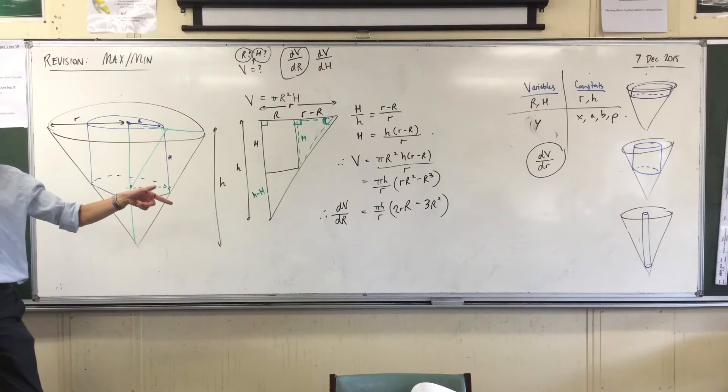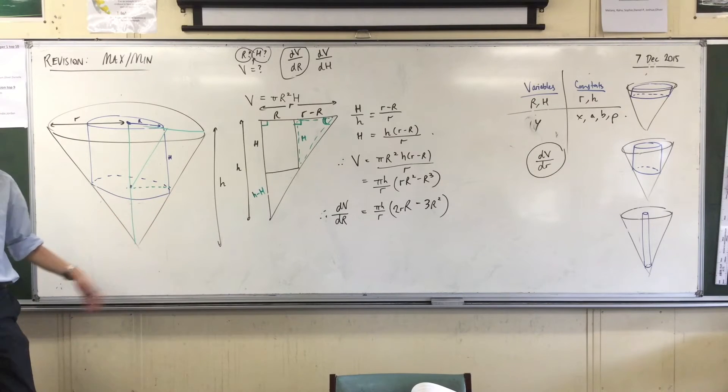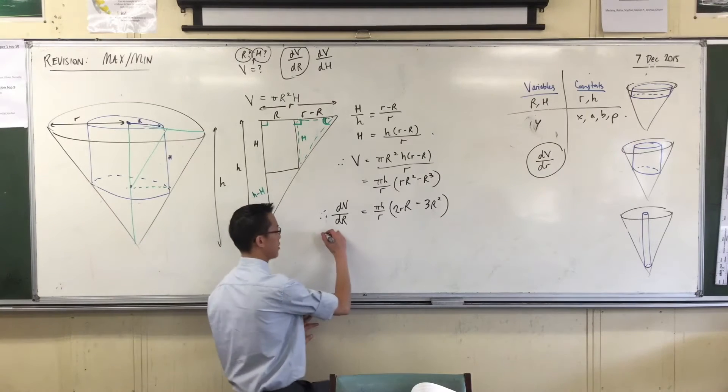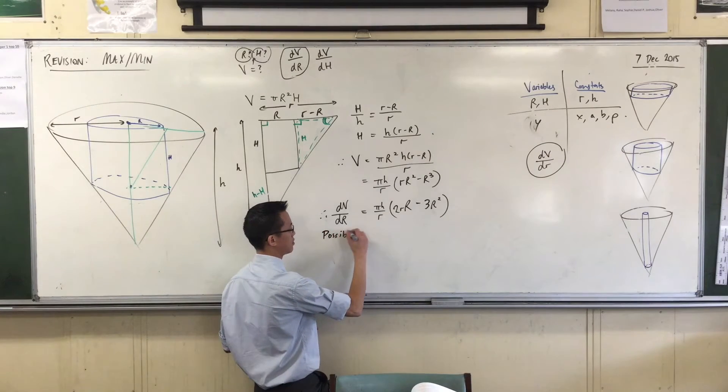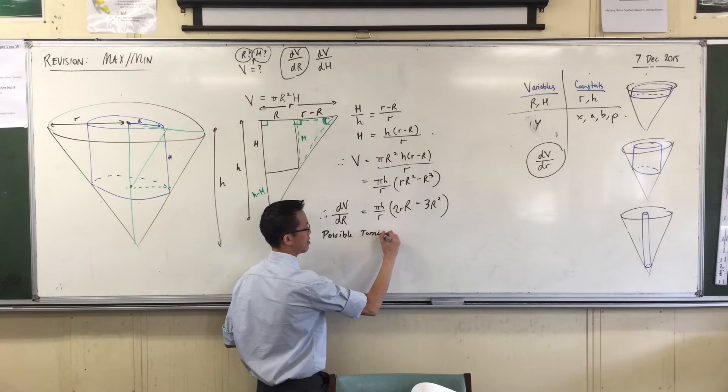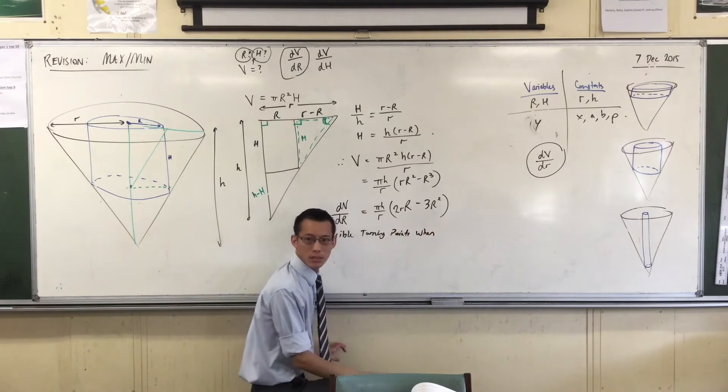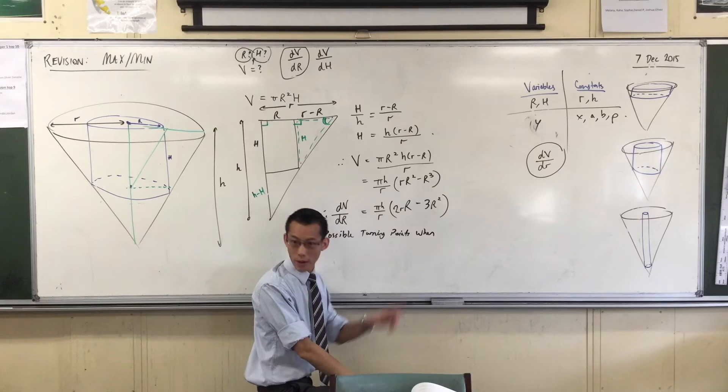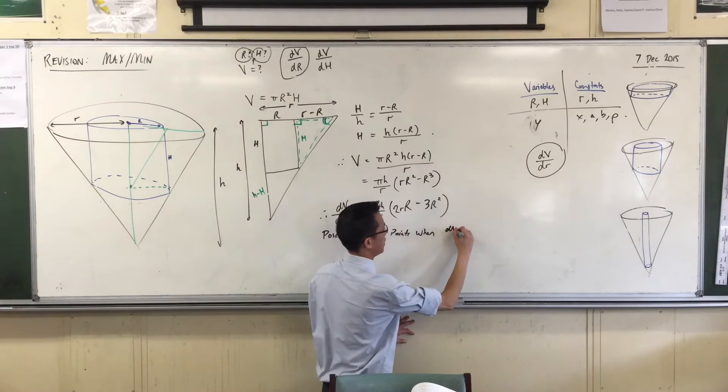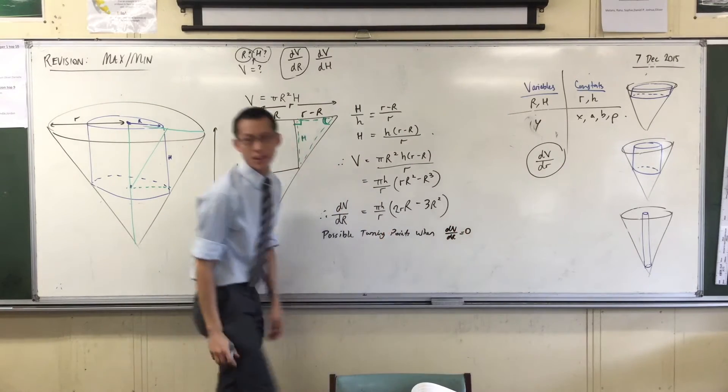Now, I want to know where possible turning points are. Turning points, because I want a maximum. So I will say, possible turning points when, when what? When the derivative is zero, right? When dv on dr equals zero.